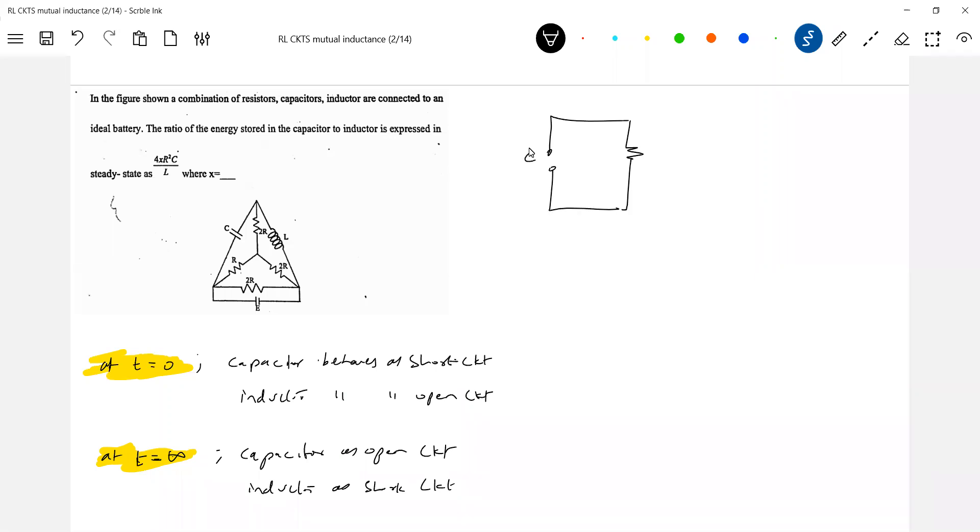There's a capacitor. And this is the Inductor. There's a resistor, 2R. And here is what the Inductor. I'll write it here.